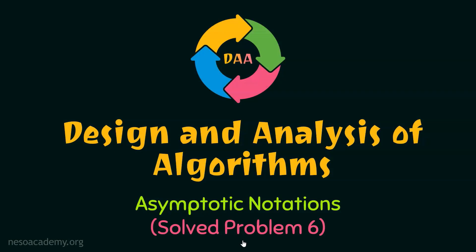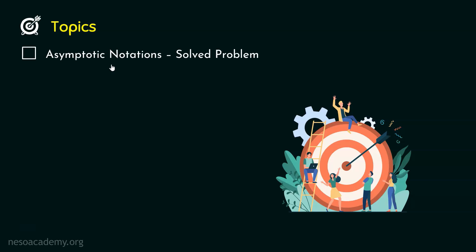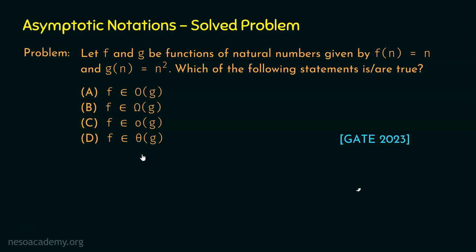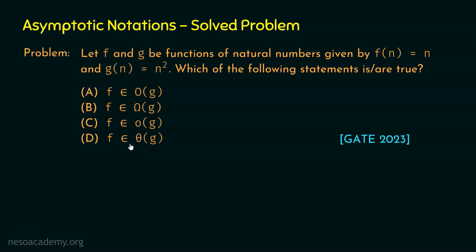Let's solve problem number 6 on asymptotic notations. Let f and g be functions of natural numbers given by f(n) = n and g(n) = n². We need to determine which of the given statements is or are true — it is possible that multiple statements can be true.